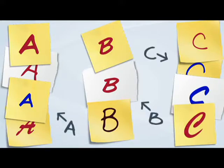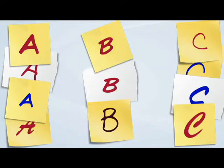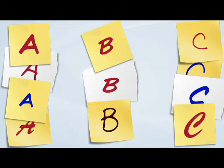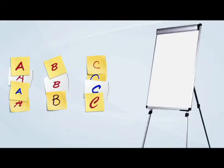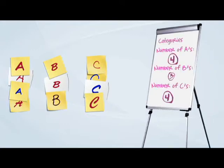Now that we've chunked, categorized, organized, and sequenced the information, it's important to capture a record of what we've done. This can be done by taking notes on chart paper, a whiteboard, or a computer. Hard copies, photos, or digital files of these notes can be kept to preserve the thinking of the group.